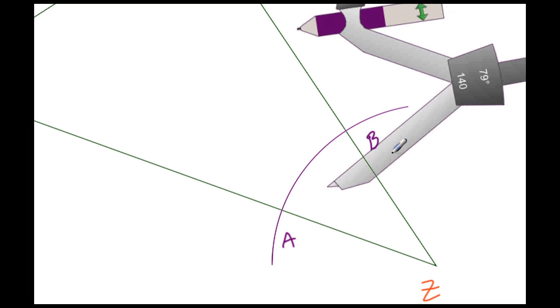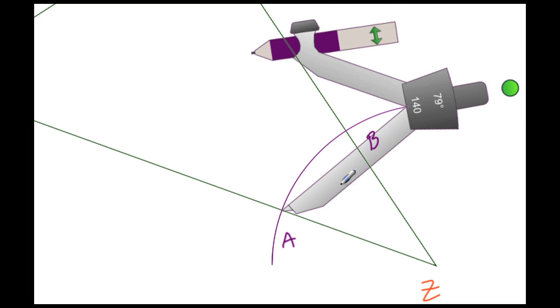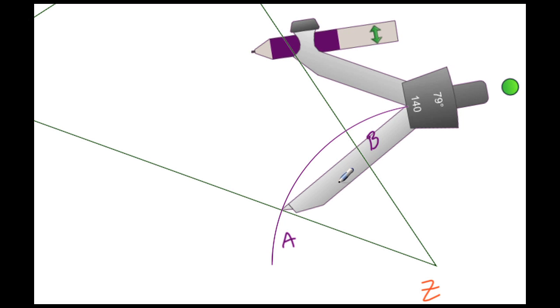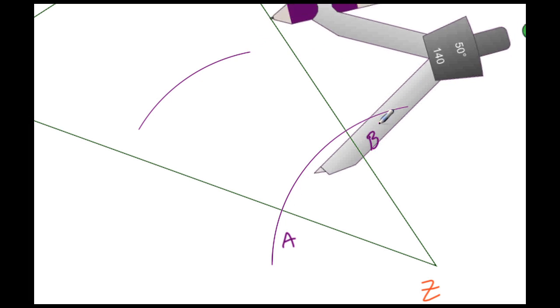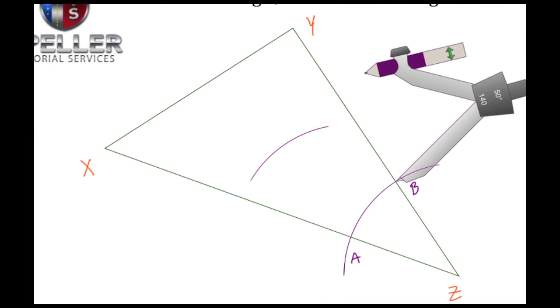Without changing the radius of the compass, we're going to place the point here on A and we're going to draw another arc. Let me try to place this in a good location. All right, right there. And then I'm going to come back here to B and again draw yet another arc.